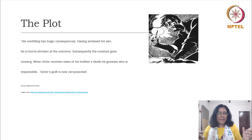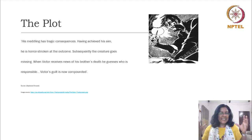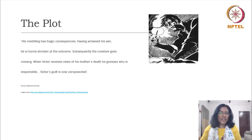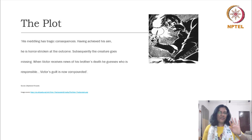When Victor is experimenting, he is in fact meddling with science — with the deepest secrets of nature and of life processes — and this kind of meddling has tragic consequences. He does achieve his aim. He is successful in discovering the spark of life which gives birth to this monster. He is able to recreate life, put together life in this novel way from various body parts. But he is horror-stricken at the outcome because it is a monster that he has birthed. He rejects the creature and runs away, and eventually the creature also goes missing.